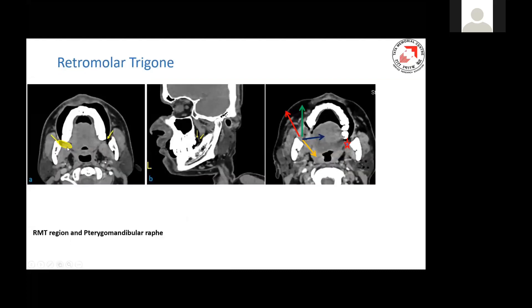Posteriorly we have the retromolar triangle, which is the space between the last molar tooth and the ascending ramus of the mandible. This is the retromolar trigon, better appreciated in parasagittal reconstructions. You can see the last molar area and the ascending ramus, and this is the area where there is an RMT. Below the RMT there is a pterygomandibular raphe below the mucosal fold. This is an area from where the disease can enter into various compartments, with early penetration into various compartments and early involvement of the bone.